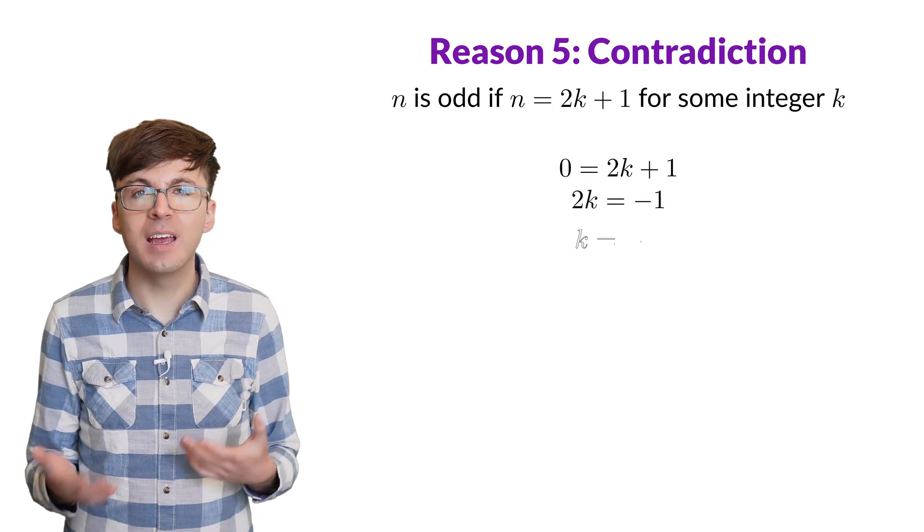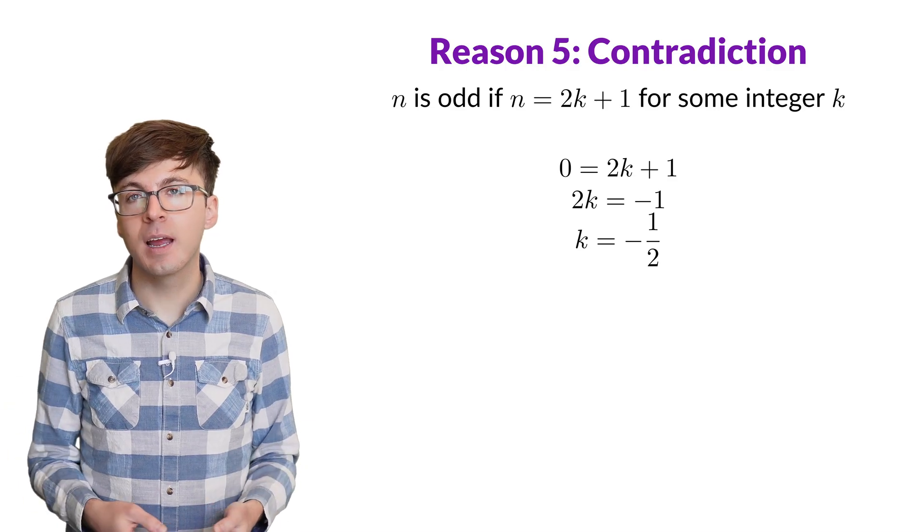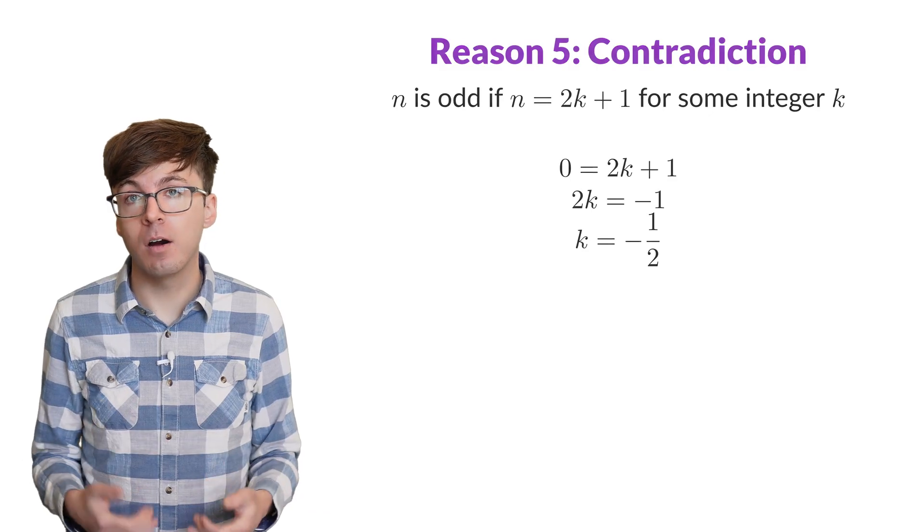Then we can subtract 1 and divide by 2 to get that k must equal negative 1 half. That's not an integer, which is a contradiction. So 0 is not odd.